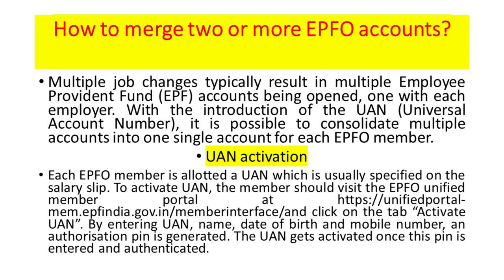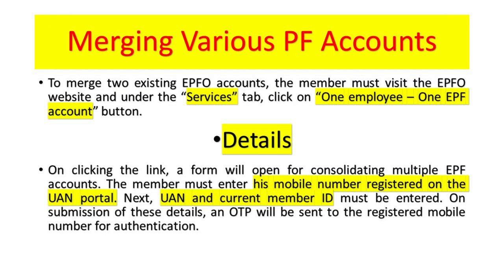UAN Activation: Each EPFO member is allotted a UAN, which is usually specified on the salary slip. To activate UAN, the member should visit the EPFO unified member portal at https://unifiedportal-mem.epfindia.gov.in and click on the tab 'Activate UAN'. By entering UAN, name, date of birth, and mobile number, an authorization PIN will be generated. The UAN gets activated once this PIN is entered and authenticated.